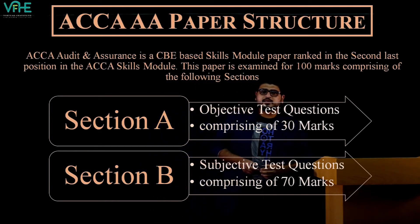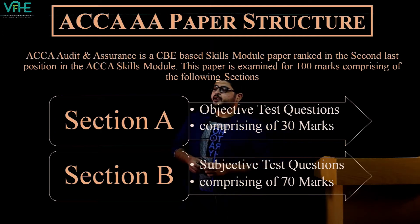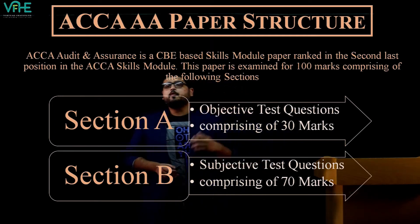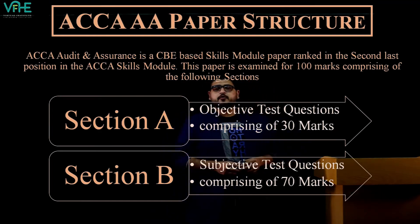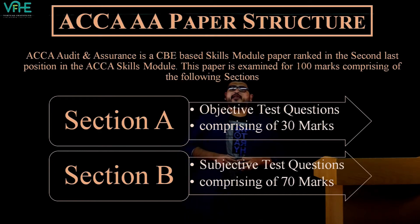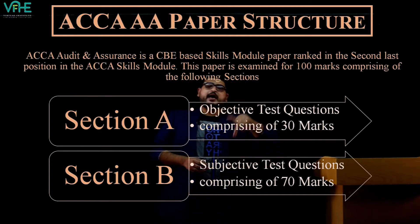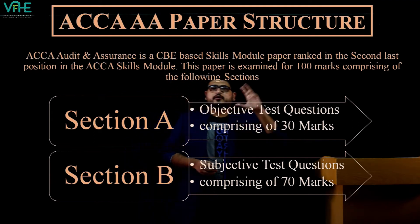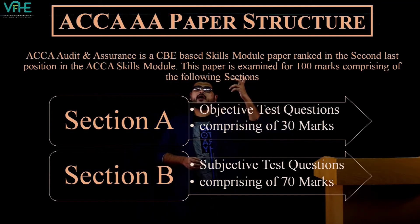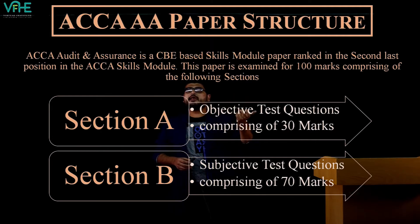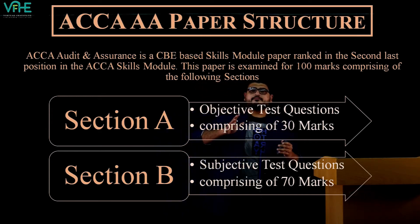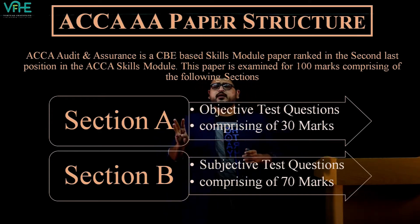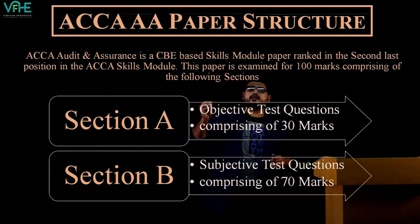The paper has two sections. Section A is 30 marks and comprises objective test questions — mostly MTQs. You'll have three questions, each with five small scenario-based questions carrying two marks each, making 10 marks per question and 30 marks total. Hardly any question in Section A is purely knowledge-based.